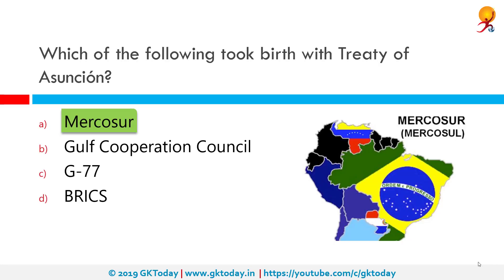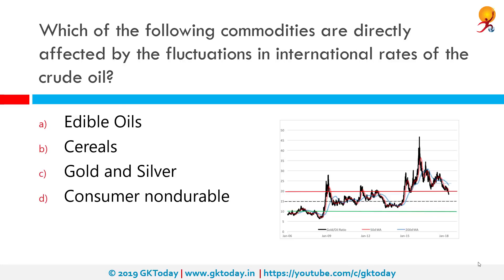At present, Mercosur is a full customs union and trading block. Its full members are Argentina, Brazil, Paraguay and Uruguay. Which of the following commodities are directly affected by the fluctuations in international rates of crude oil? The correct answer here would be gold and silver, which are directly affected by the fluctuations of crude oil rates.